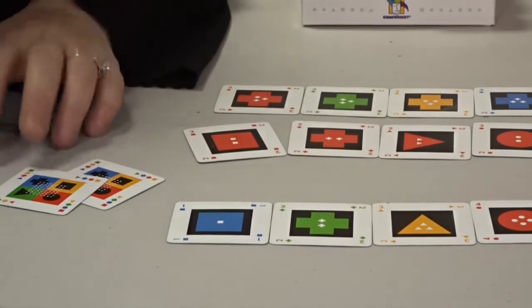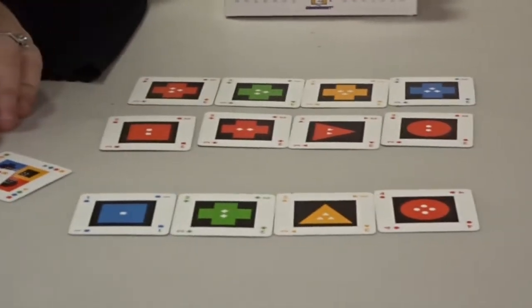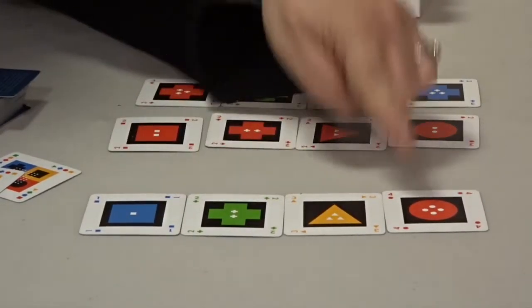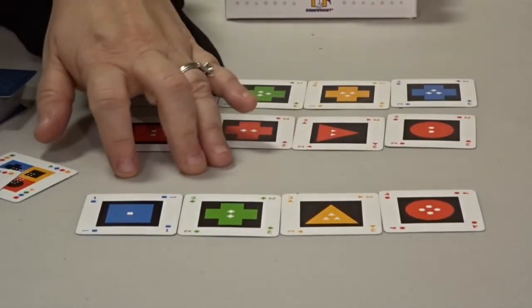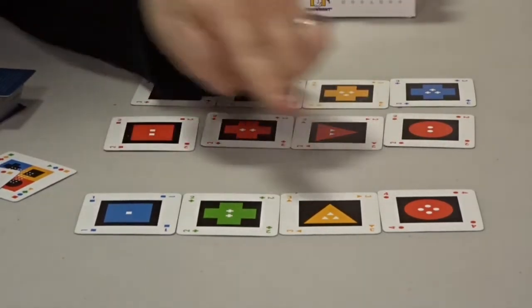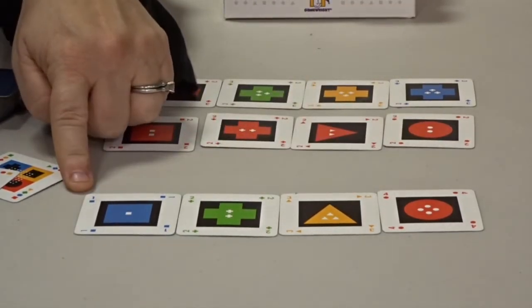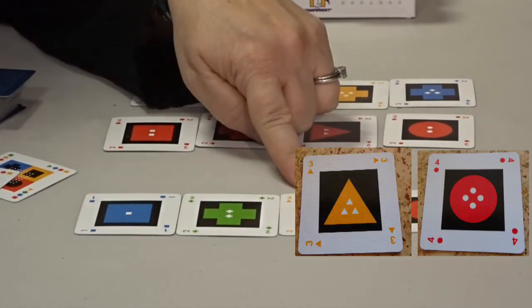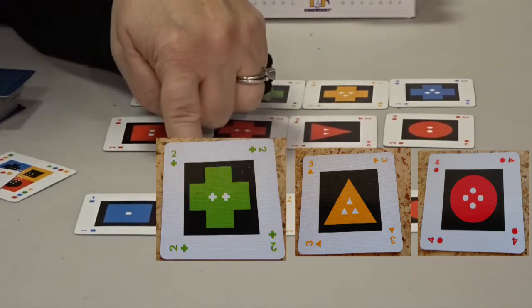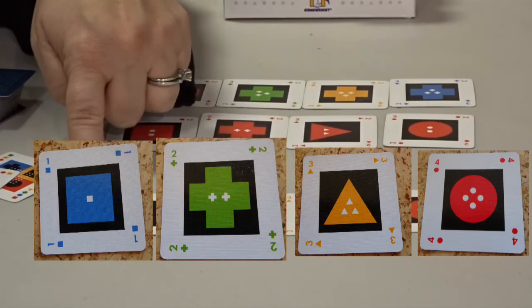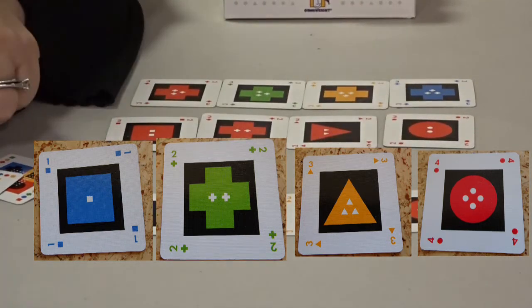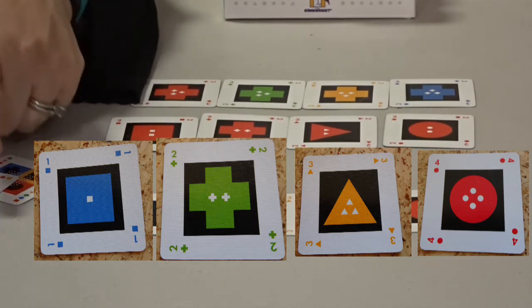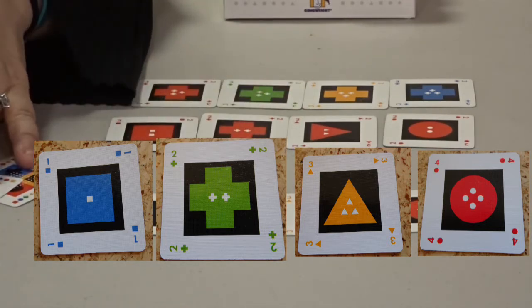The rules for a line is that each of these characteristics must always be the same or different on a card. This first line is called a lot, when you get all four cards that fit into a line. This lot is where all of the characteristics are different. You have a red 4 circle, a 3 yellow triangle, a green 2 plus sign and a 1 square that's blue.